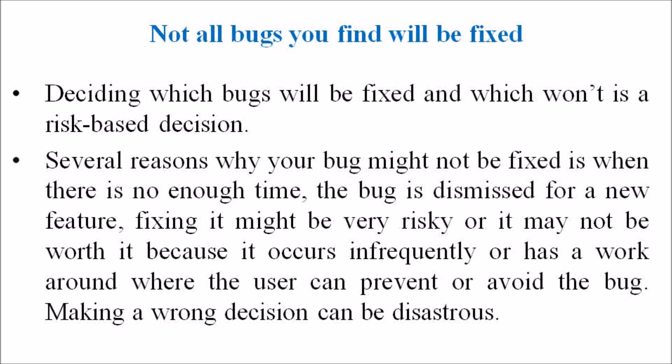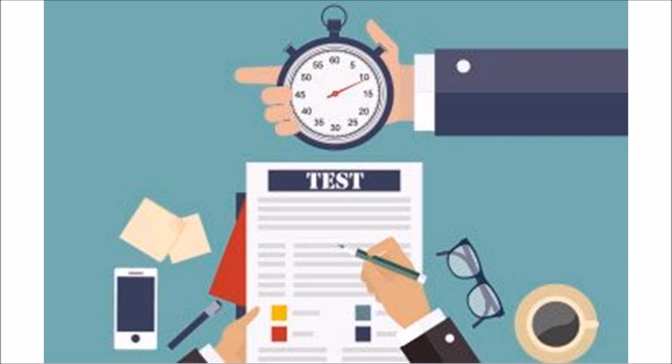The next point is not all bugs you find will be fixed. Deciding what bugs will be fixed and which won't is a risk-based decision. Several reasons why your bug might not be fixed include: there is not enough time, the bug is dismissed for a new feature, fixing it might be very risky, it may occur infrequently, or it has a workaround where the user can prevent or avoid the bug. Making a wrong decision can be a disaster to our project.